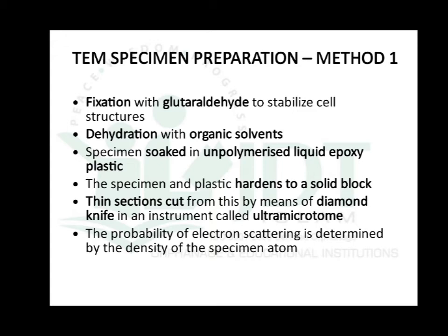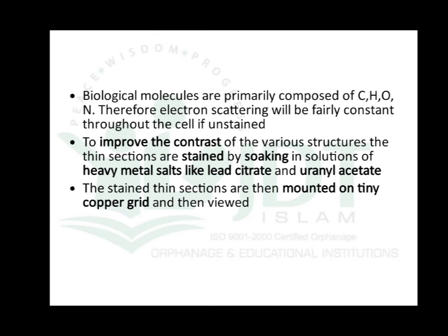The probability of electron scattering is determined mainly by the density of the specimen atoms. Biological membranes are primarily composed of carbon, hydrogen, oxygen, and nitrogen, so electron scattering will be fairly constant throughout the cell if unstained. To improve contrast, the thin sections are stained by soaking in heavy metal salts like lead citrate and uranium acetate. The stained sections are then mounted on tiny copper grids for support and viewed under TEM.